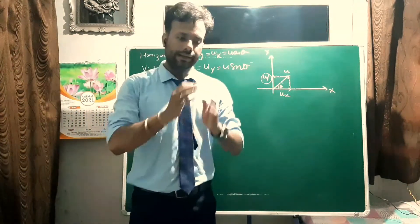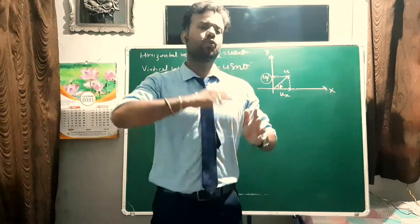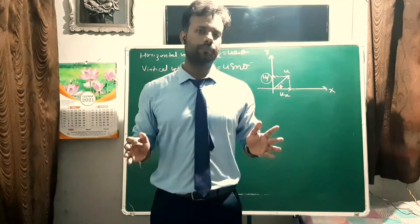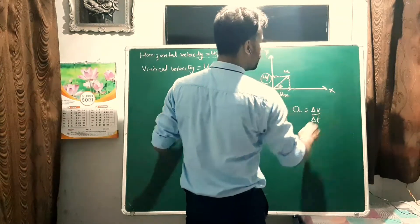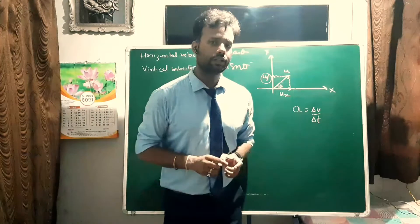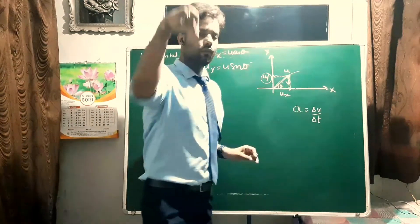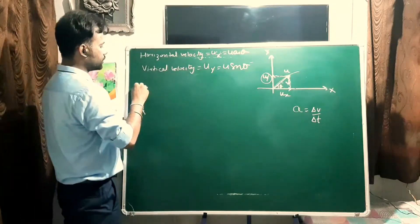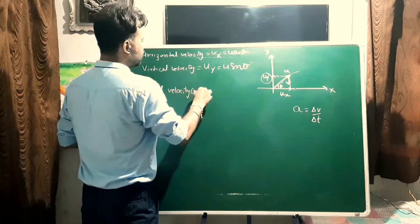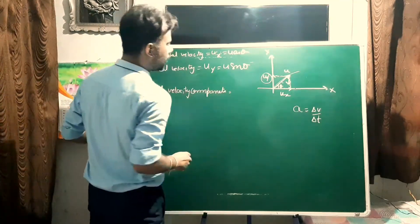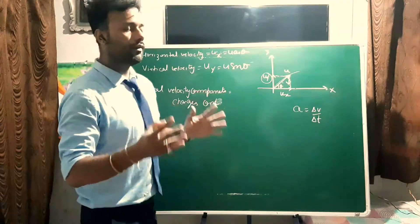Since gravity acts in the vertical plane, it only affects the vertical component of velocity. Therefore, the vertical component of velocity changes continuously throughout the motion — it is non-uniform. This is because acceleration a = dv/dt, so if acceleration acts in a certain direction, velocity in that direction changes.